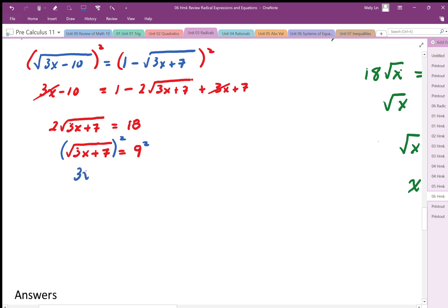So I get a nice solution here. This is equal to 81. I end up with 3x is equal to 74. And then dividing both sides, I end up with 74 over 3.